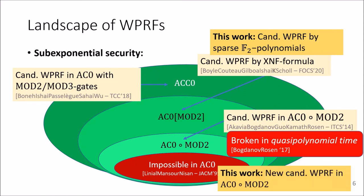In this work, we show how we can fix this candidate and bring forward a new candidate weak PRF in AC0 on top of parities, the only one currently known that plausibly has sub-exponential security.